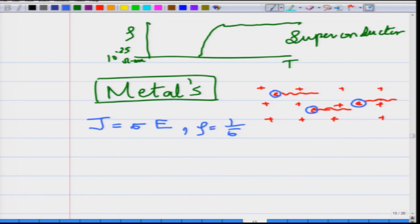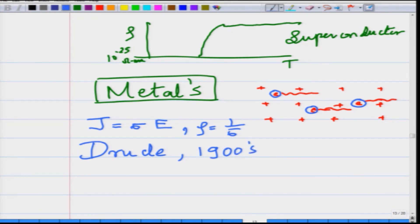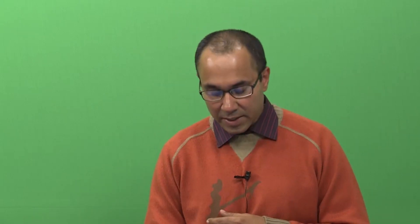Now let us try to understand the conductivity — how does it arise and where does it come from? Here came Drude with his model in the 1900s. He wanted to explain where conductivity or resistivity arises inside a metal and how electrons give rise to this property. His idea was simple: he realized he could invoke a model very similar to the kinetic theory of gases.